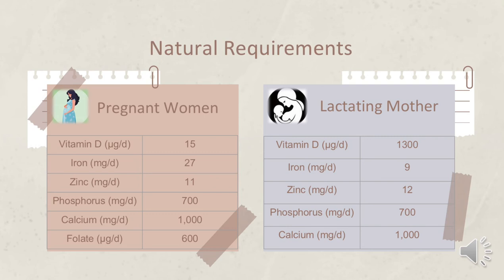Next and the last is lactating mothers. Their requirements include: vitamin D 1,000 micrograms per day, iron 9 milligrams per day, zinc 12 micrograms per day, phosphorus 700 milligrams per day, and calcium 1,000 milligrams per day.